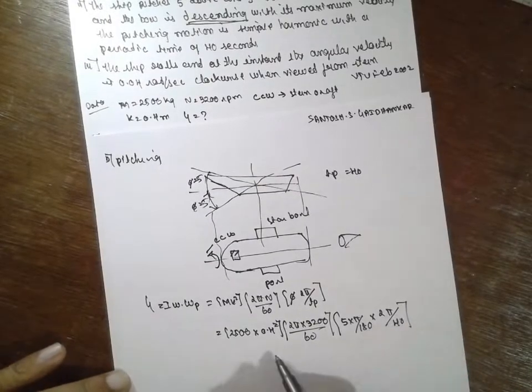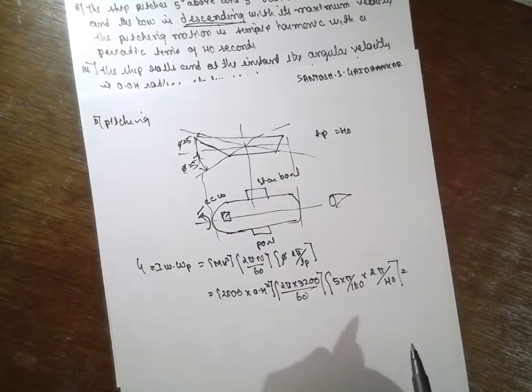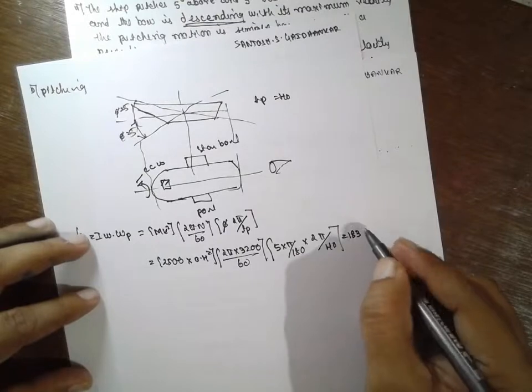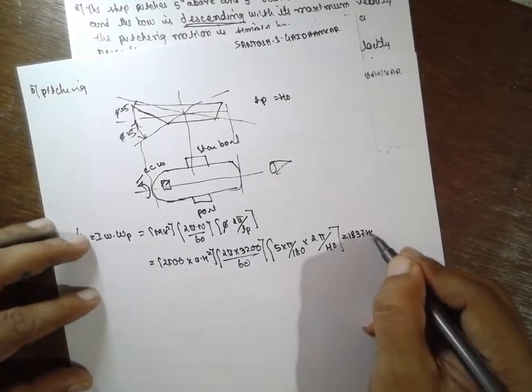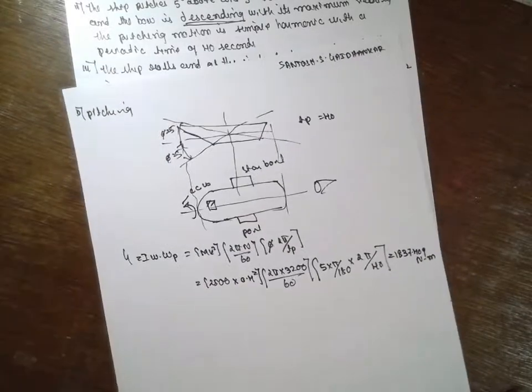If you calculate, the answer will be 1837.409 newton meter.